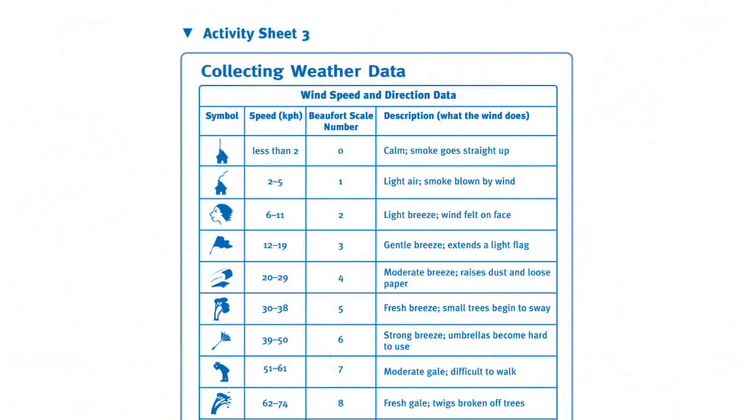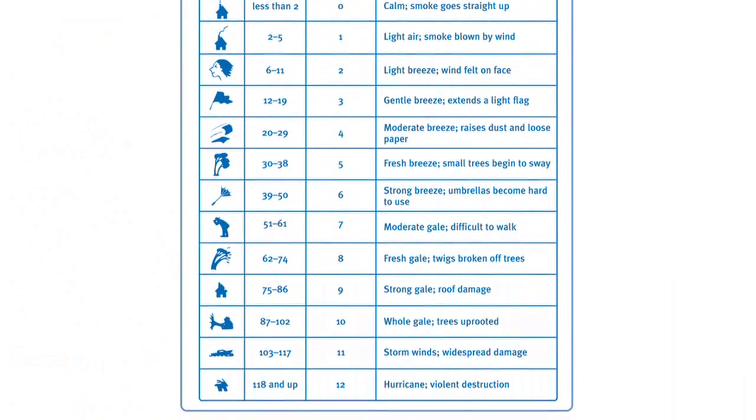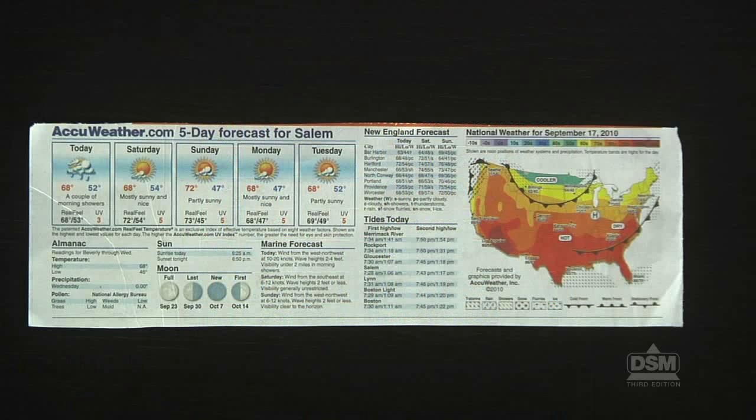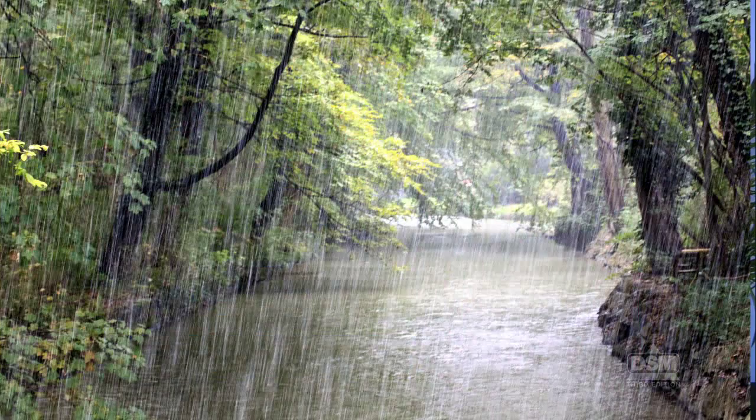To prepare for Session 1, make two copies of Activity Sheet 3 for each student. Collect weather reports, one per team. If at all possible, conduct this activity just before rain is expected.